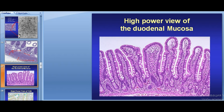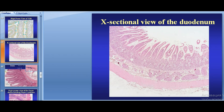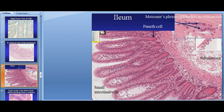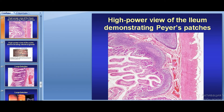Here you can see the duodenal mucosa with many enterocytes composing the epithelium of the small intestine, and a small number of goblet cells located between them — they appear as colorless gaps in the row of enterocytes. The submucosa consists of loose connective tissue containing aggregates of lymphoid tissue known as Peyer's patches, and in the duodenum, Brunner's glands — compound tubular mucous glands.